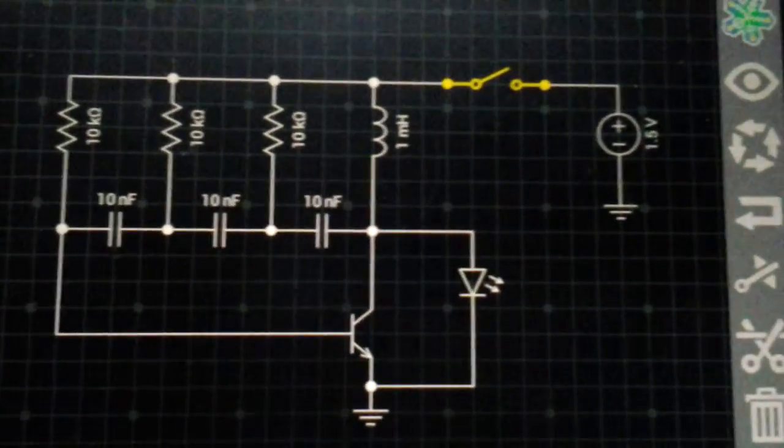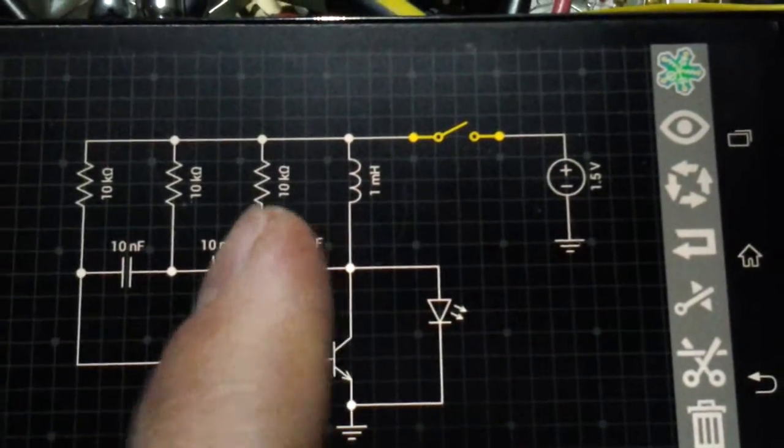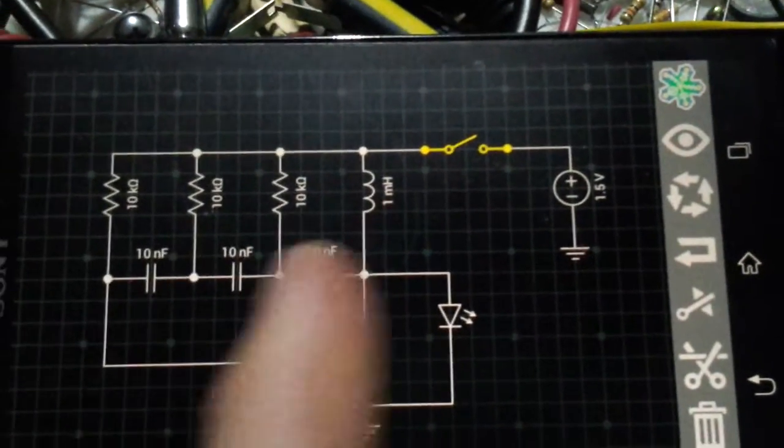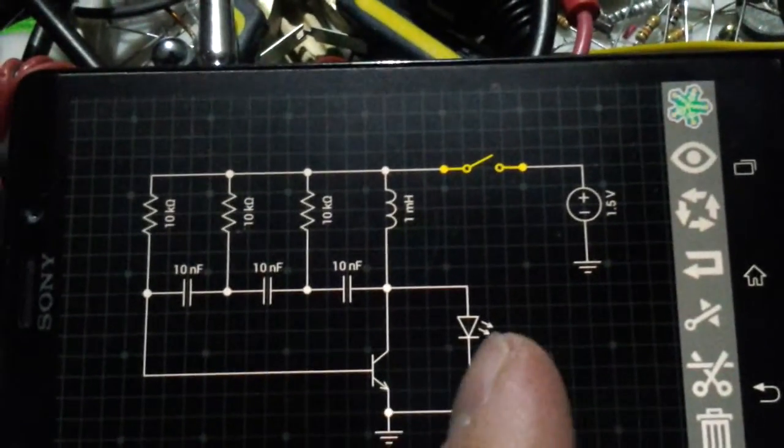It has three capacitors in series, three resistors in parallel, all three of the same value, one transistor, one LED.